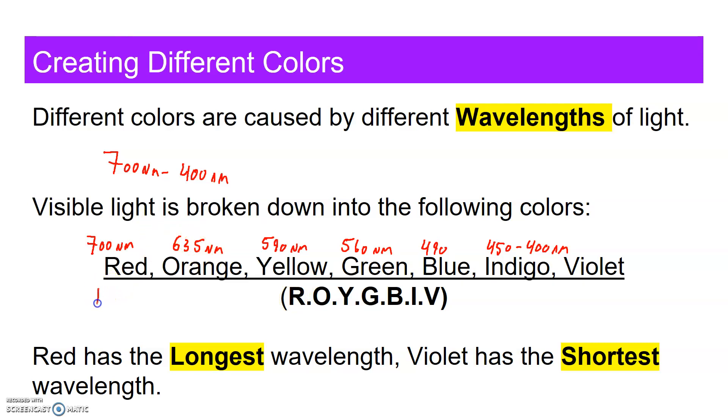Now red has the longest wavelength. Recall on the electromagnetic spectrum that red was closer to radio waves and violet was closer to x-rays, which had the shortest wavelength. So red has a longer wavelength than violet. Violet is about 400 nanometers and red is about 700 nanometers.